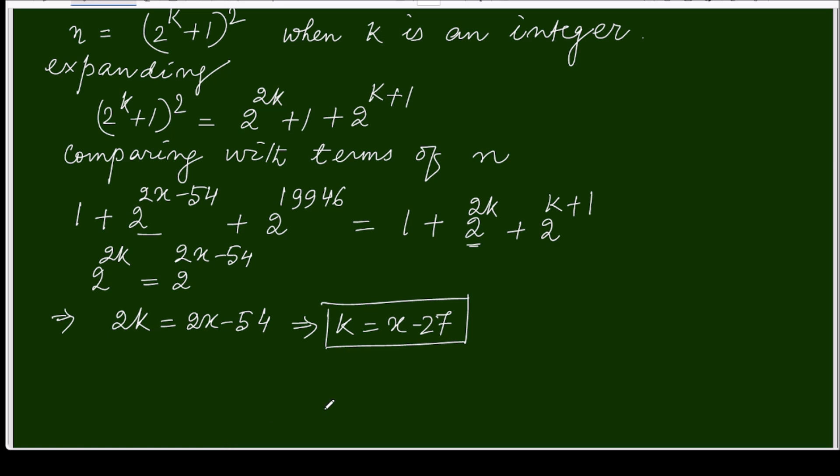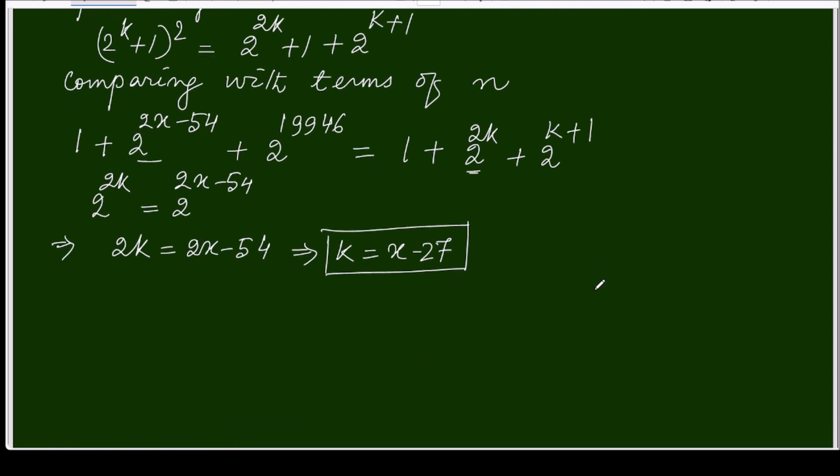Next, I will compare the third term with the third term. So 2^(k+1) equals 2^19946, which means k + 1 equals 19946, or k equals 19945.